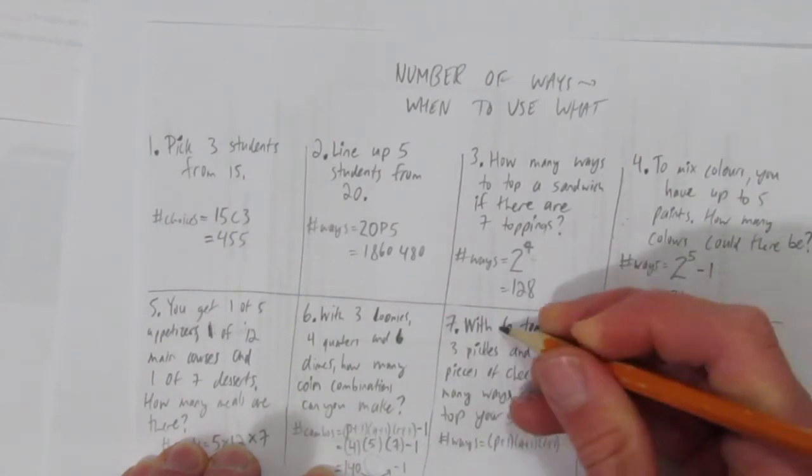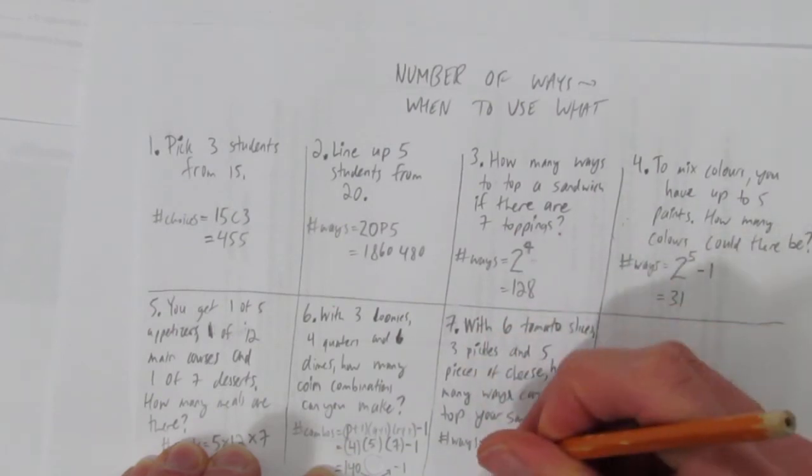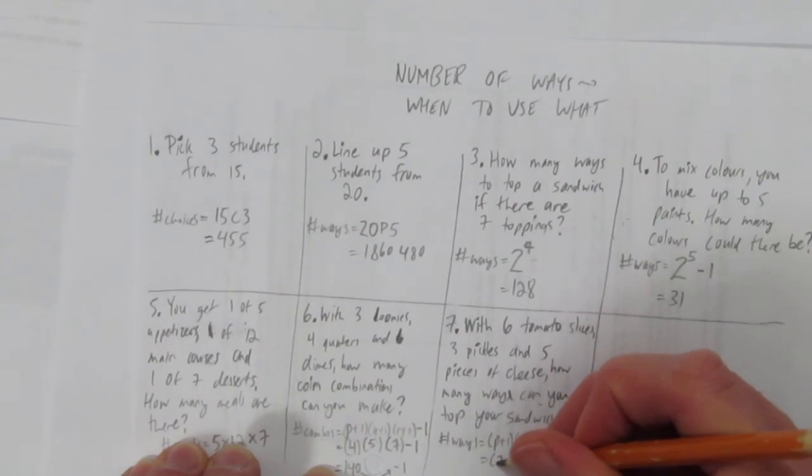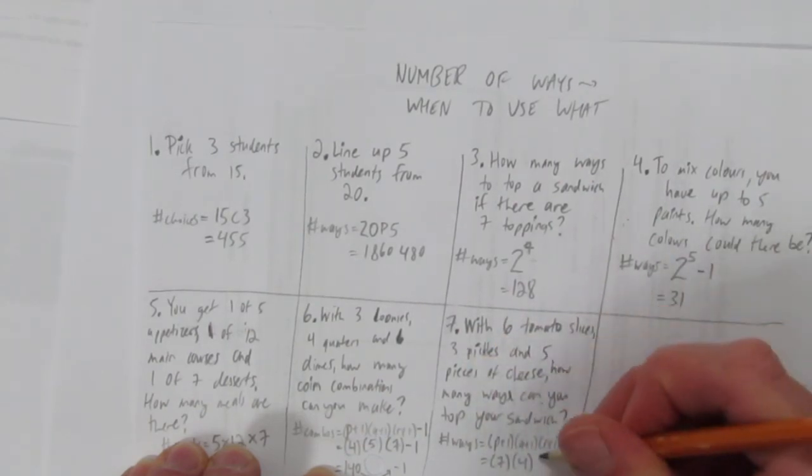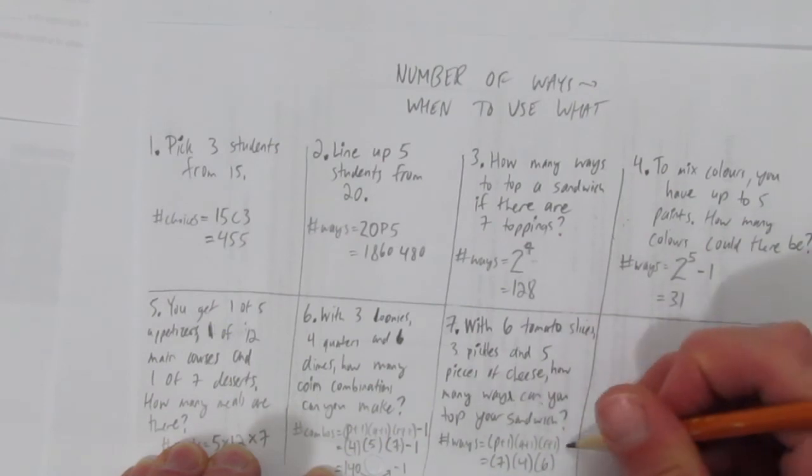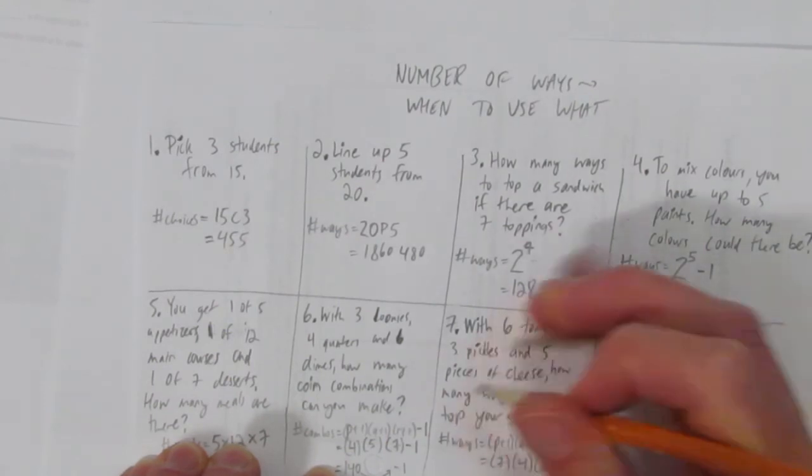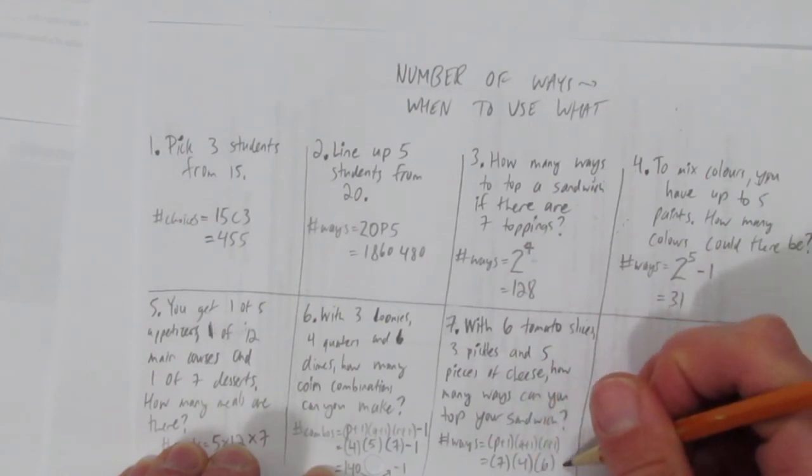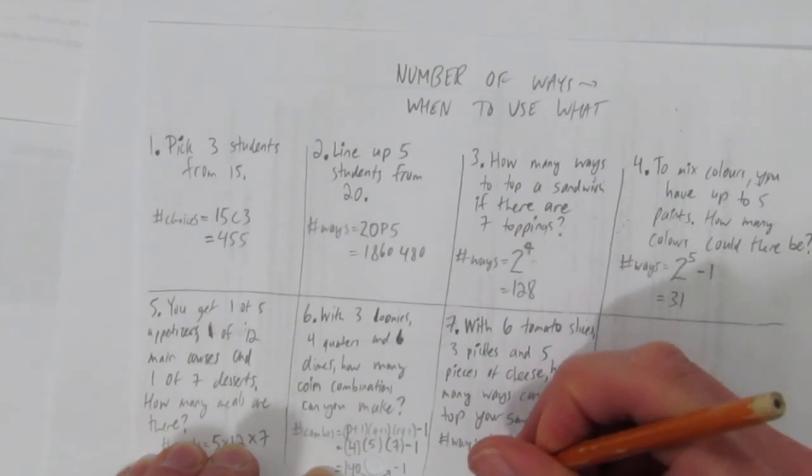Again, we'd use more if there were more things, but there's only three things. Like question six, if there's six things, we have seven choices. If there's three things, four choices. If there's five things, six choices. Do we need to take away one? That is, can you top your sandwich by choosing none of all of these? The answer is yeah, you don't have to choose any topping.